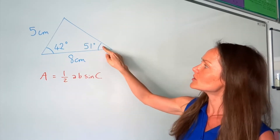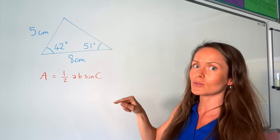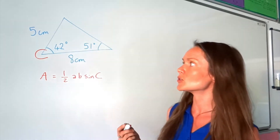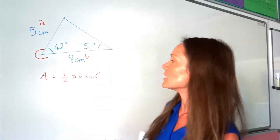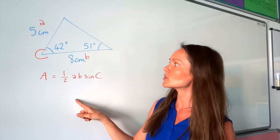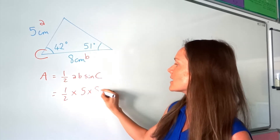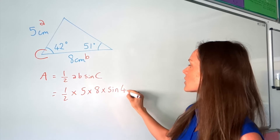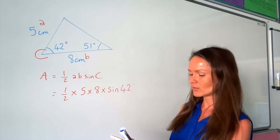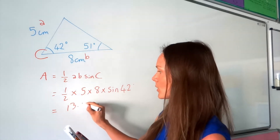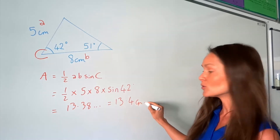If we look at this example, I don't want to take this angle because I don't know this side — we need to know both sides next to the angle. So we need to use the angle 42 as angle C, because those are the two sides that we know. Labelling those a and b, it's just a matter of substituting into the formula: a half times a — which is 5 — times b — which is 8 — times sine 42. Put that in your calculator and the area is 13.38, which rounds to 13.4 centimetres squared to three significant figures.